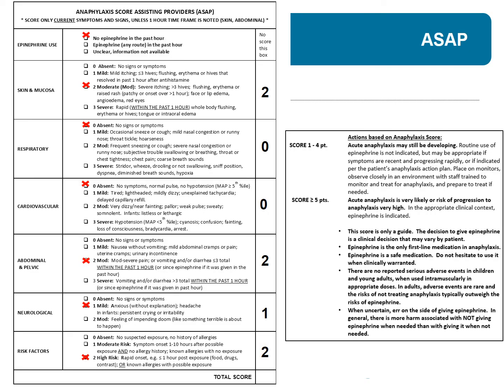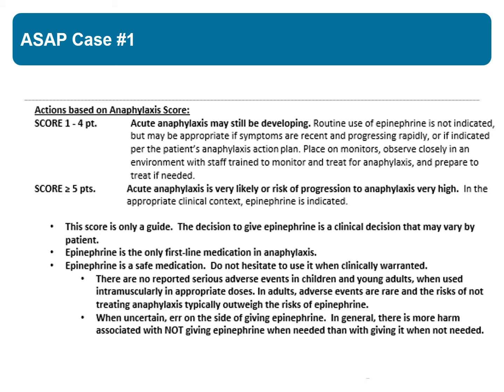Putting that all together, he gets two, zero, zero, two, one, two — or a total of seven points. Looking at the interpretation of our score, it is dichotomized into a score below five or a score of five and above. For a score of five or higher, acute anaphylaxis is very likely or the risk of progression to anaphylaxis is very high. In the appropriate clinical context, epinephrine is indicated. So we are going to give our patient epinephrine at this point.